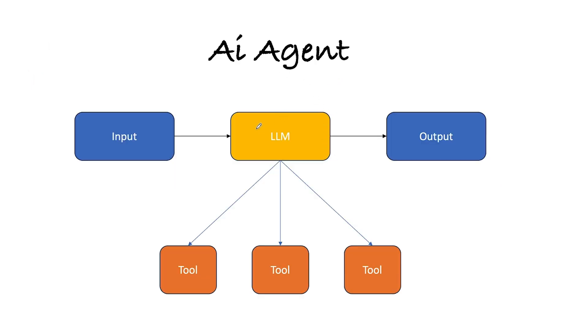Next, we have the AI agent. We have input, here is our brain the LLM, and we have an output. Now we have something called tools. These tools allow the agent a lot of variability. The agent can decide to use this tool and this tool, but not that tool. Or it could decide to use all three, or it could decide to use none.